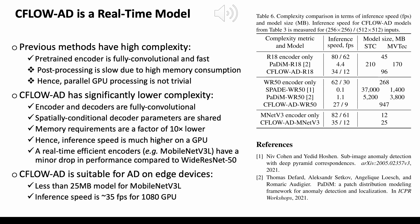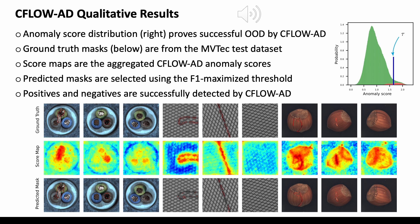At the top right we show the distribution of anomaly scores for our method on the MVTAC test dataset, with anomalies and anomaly-free feature vectors that can be separated by a threshold. At the bottom we show ground truth masks, our score map, and the predicted masks with the selected threshold. We can see that C-Flow AD is quite successful in detecting positives and negatives.